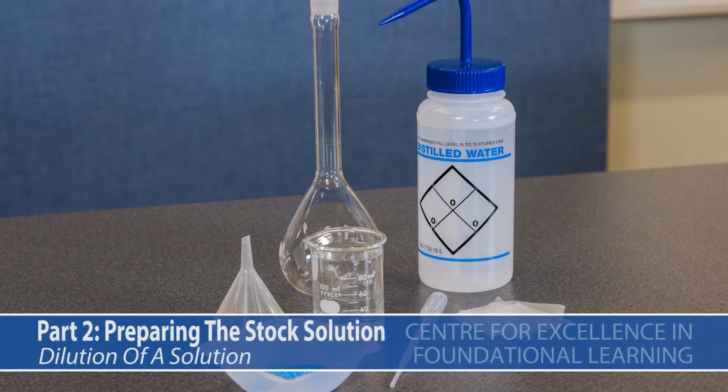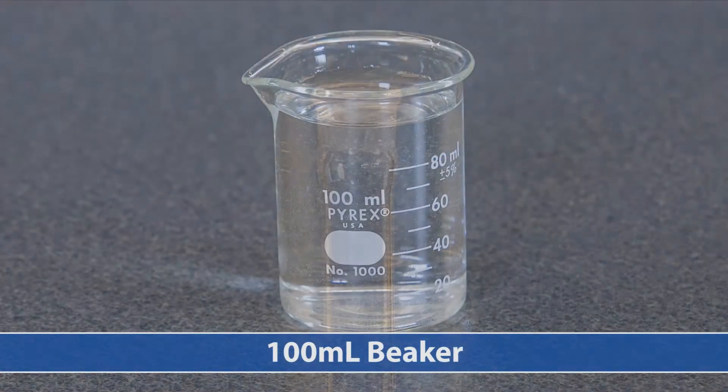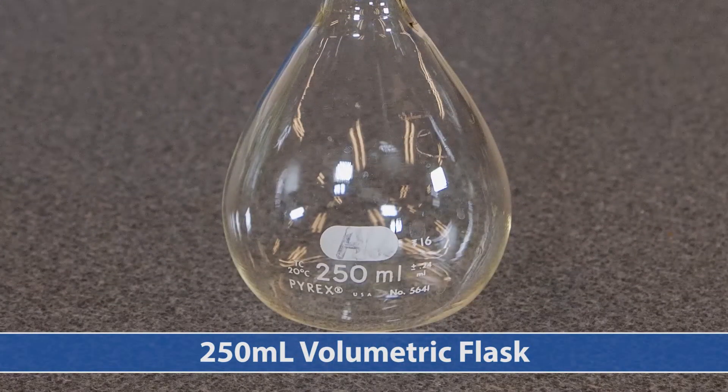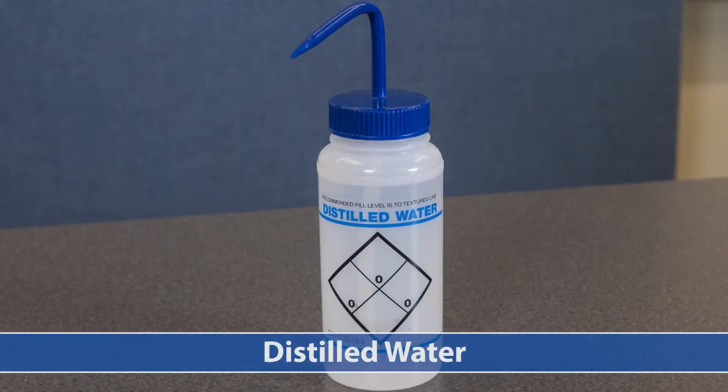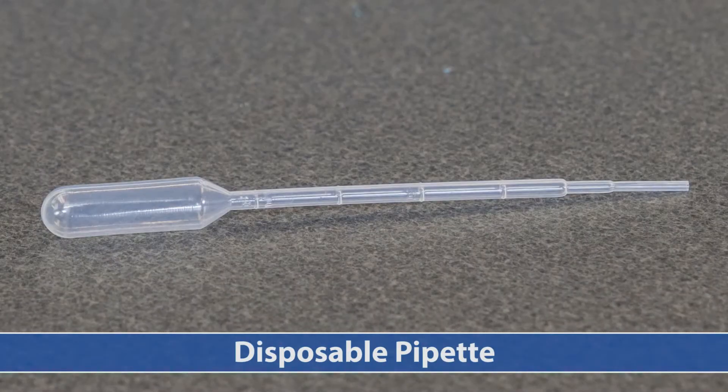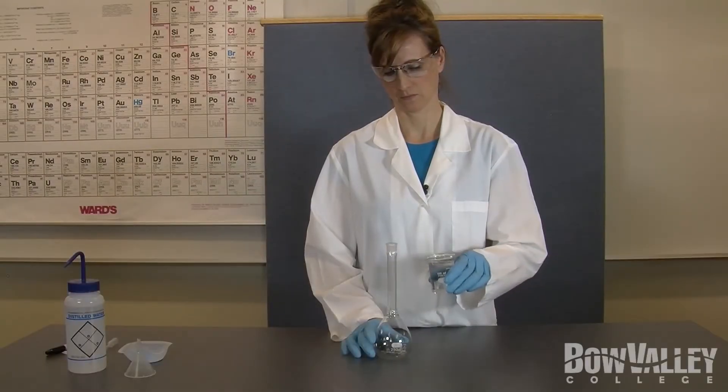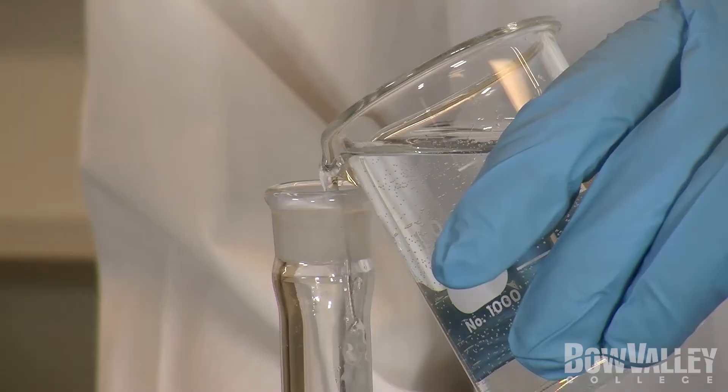To complete this step we will use the following apparatus: a powder funnel, a disposable pipette and a marker for labeling. First we will need to pour water into the volumetric flask until it is about one third full.